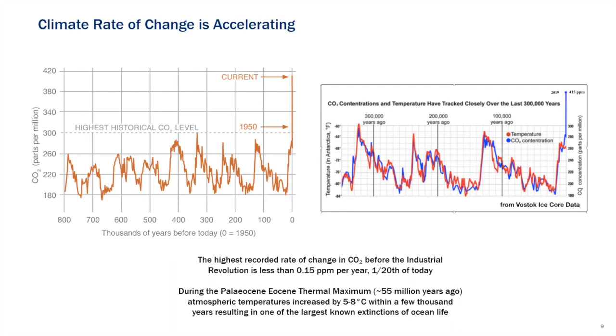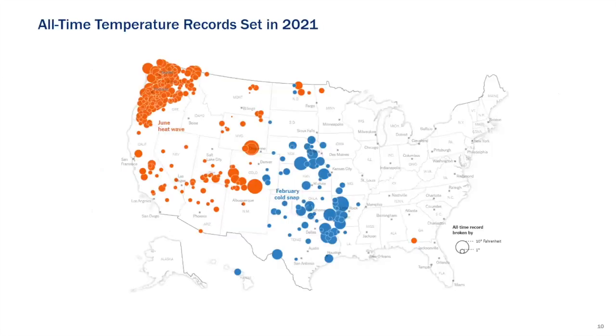But the rate of change in the climate, we haven't seen this for millennia. And it's kind of alarming what the impact could potentially be. Here you see the CO2 and temperature changes. The last time it was changing this fast was during this thermal maximum, where it was the largest known extinction of ocean life. So if we could come up with new technologies, we can